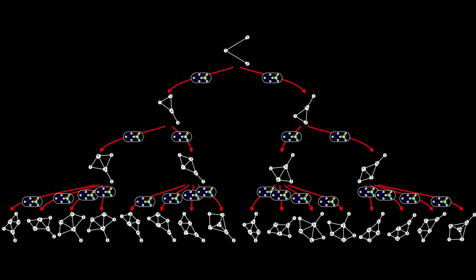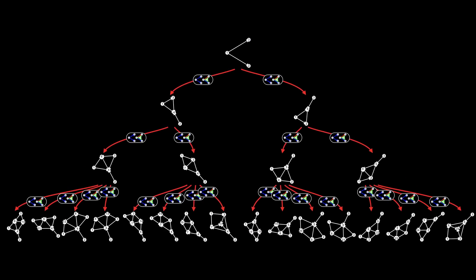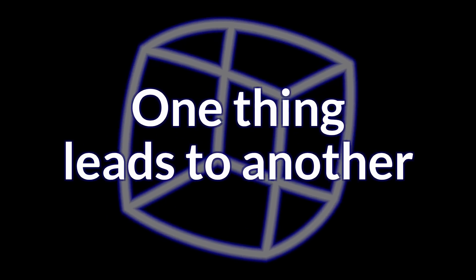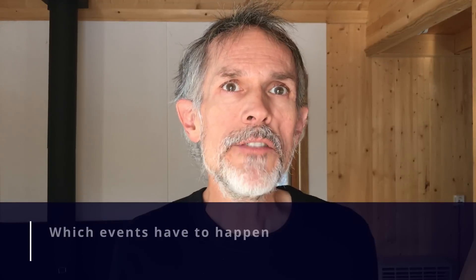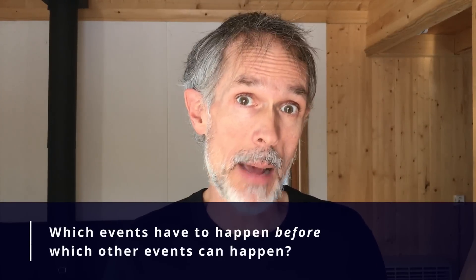I've shown each of the other events in the same way, with a white oblong capturing the details of the application of the rule. Now let's complete our shift in perspective. Until now, we've focused on which hypergraph follows which other hypergraph. Let's change our focus to which event follows which other event — specifically, which events have to happen before which other events can happen.